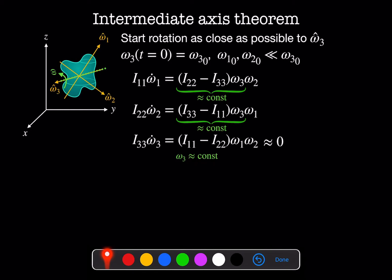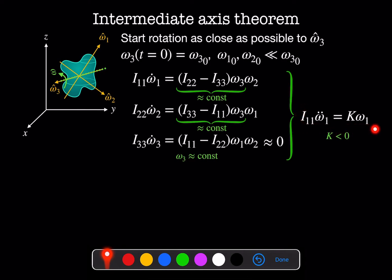Now we have a simple set of coupled equations for omega-1-dot and omega-2-dot. To solve these, we take the derivative of the first equation and plug in the definition of omega-2-dot. That gives us a second-order equation for omega-1, which says i11 times omega-1-dot equals some constant k times omega-1. Since i33 is our largest moment of inertia, the overall k is negative. That means this is our standard harmonic equation — omega-3 doesn't change, but we have a small rotation that takes us back and forth between the omega-1 and omega-2 transverse directions.